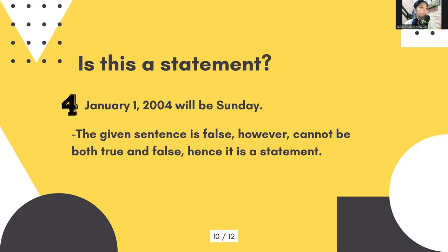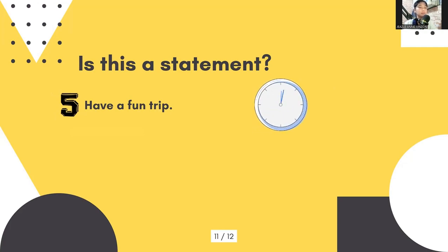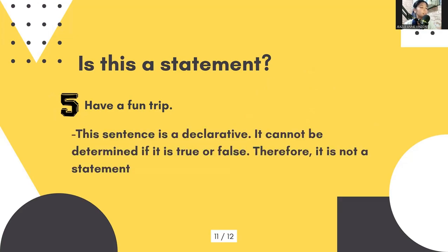And lastly, number five: have a fun trick. This sentence is declarative. However, it cannot be determined if it is true or false. Therefore, it is not a statement.